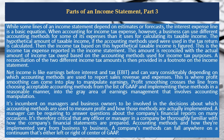Net income is like earnings before interest and tax, and can vary considerably depending on which accounting methods are used to report sales revenue and expenses. This is where profit smoothing can come into play to manipulate earnings. Profit smoothing crosses the line from choosing acceptable accounting methods from the list of GAAP and implementing these methods in a reasonable manner, into the grey area of earnings management that involves accounting manipulation.